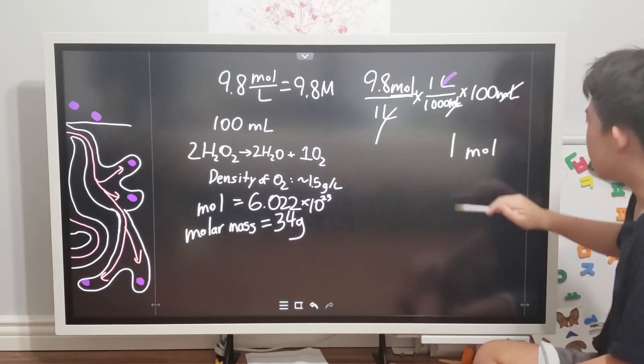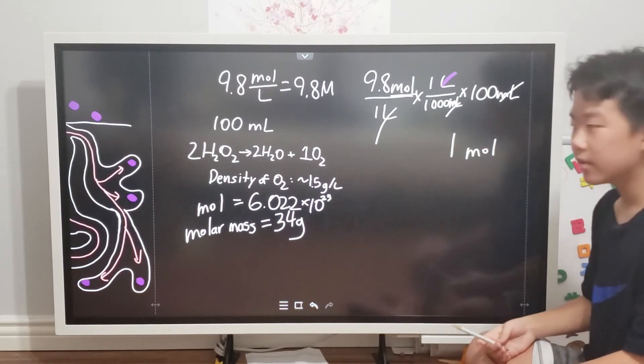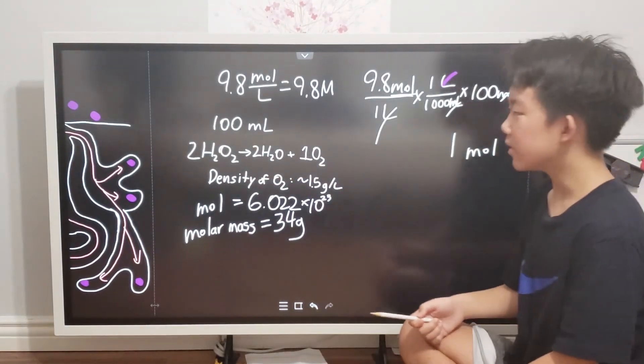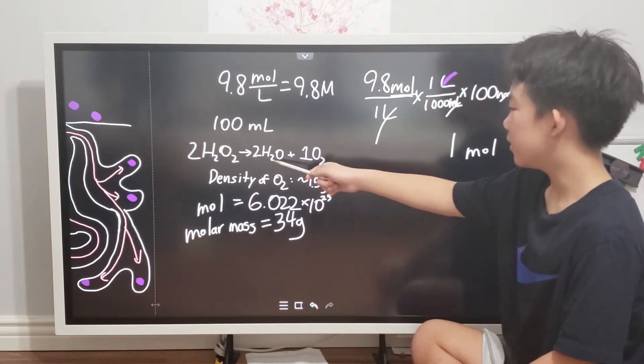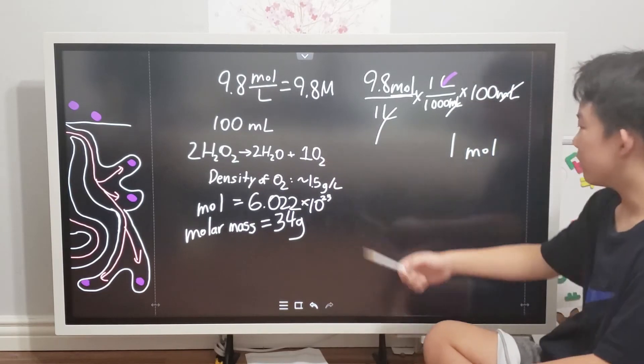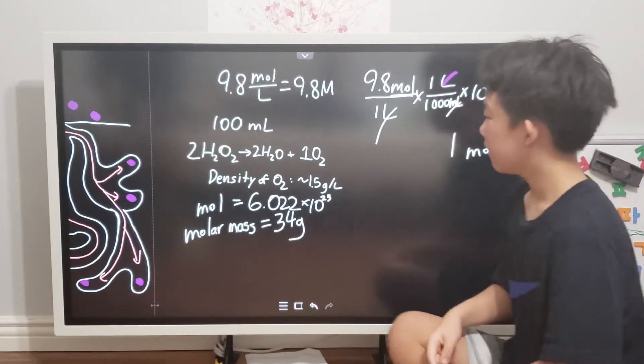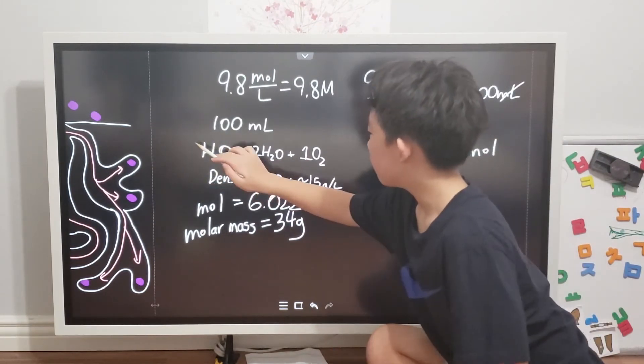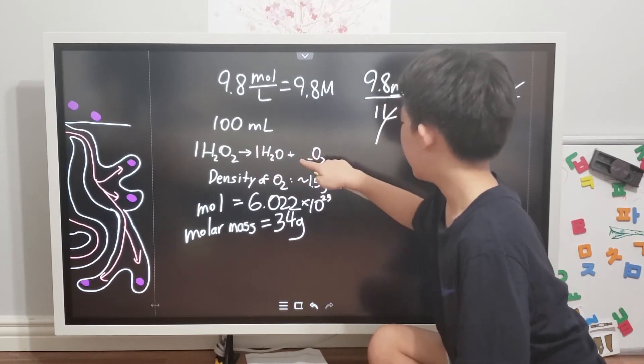Let's round it up to 1 mole of hydrogen peroxide. Next, we need to apply this equation. This equation states that 2 moles of hydrogen peroxide dissociate into 2 moles of water and 1 mole of oxygen. Because we only have 1 mole of the peroxide, we can change the coefficients to 1 H2O2 becoming 1 H2O and half O2.